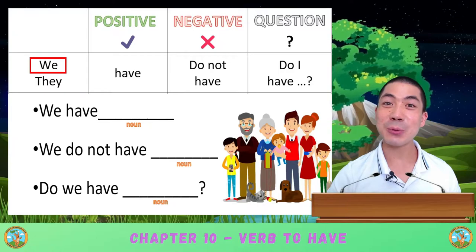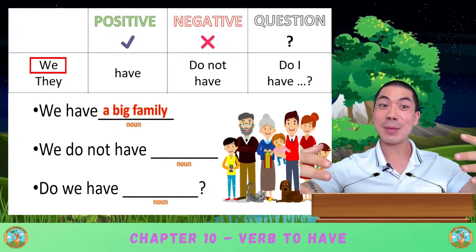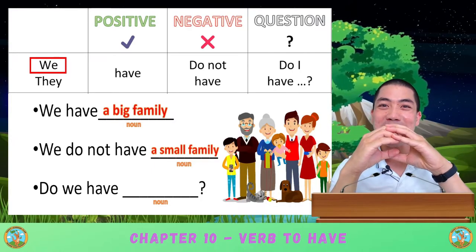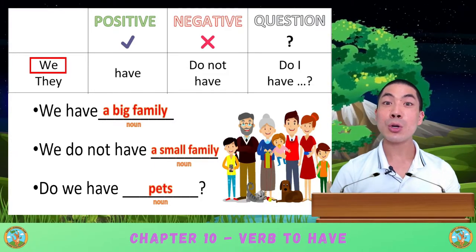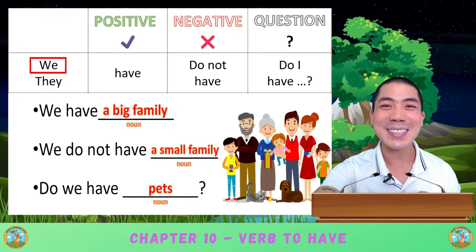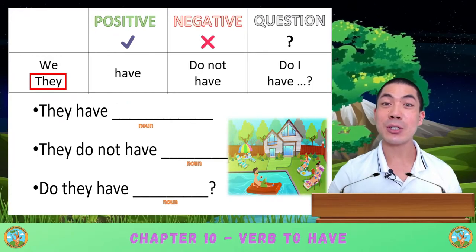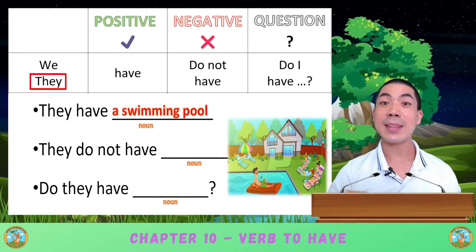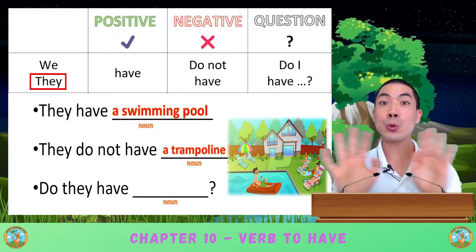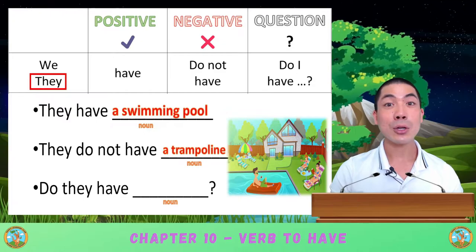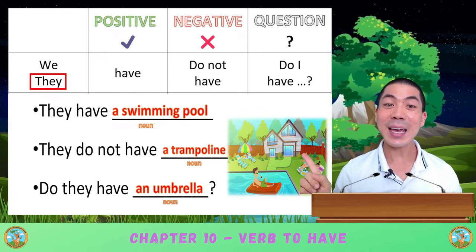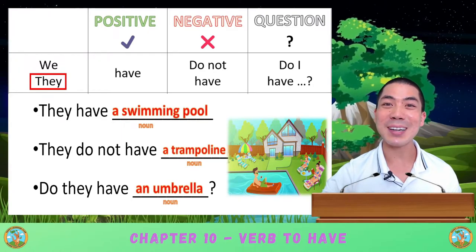In this picture, we can say 'We have a big family. We do not have a small family.' For the question, 'Do we have pets? Yes, we have two pets.' And finally, for this picture, let's read this together. 'They have a swimming pool. They do not have a trampoline. Do they have an umbrella? Yes, they have a rainbow-colored umbrella.' Good job.